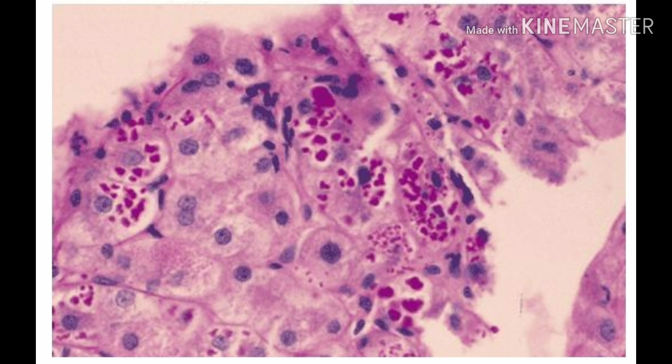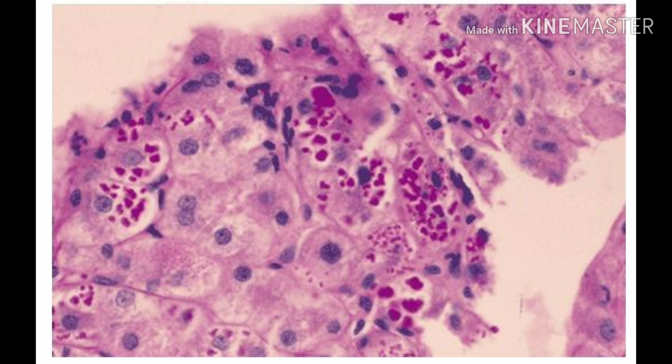The first slide shows alpha-1 antitrypsin deficiency — this is a misfolded gene product protein aggregated inside the hepatocytes which will further lead to cirrhosis. In the question stem they might tell you findings of cirrhosis like ascites, variceal bleeding, spider angiomata, testicular atrophy, or gynecomastia. Apart from that they might also give clinical findings of COPD, because alpha-1 antitrypsin deficiency is associated with both COPD and cirrhosis.